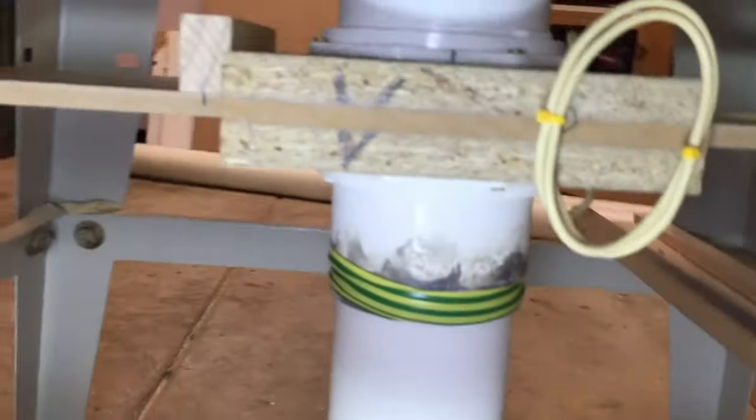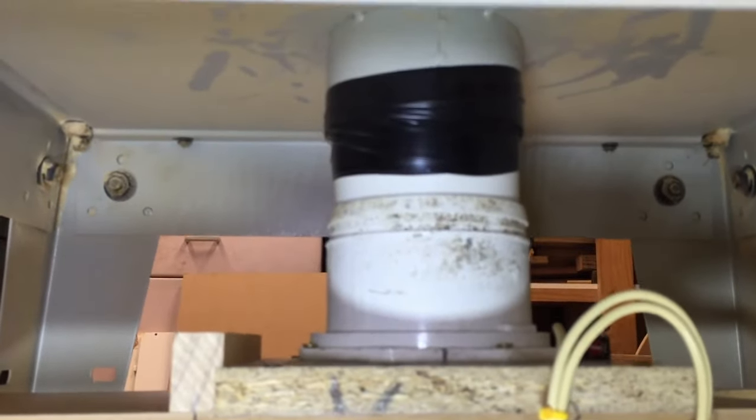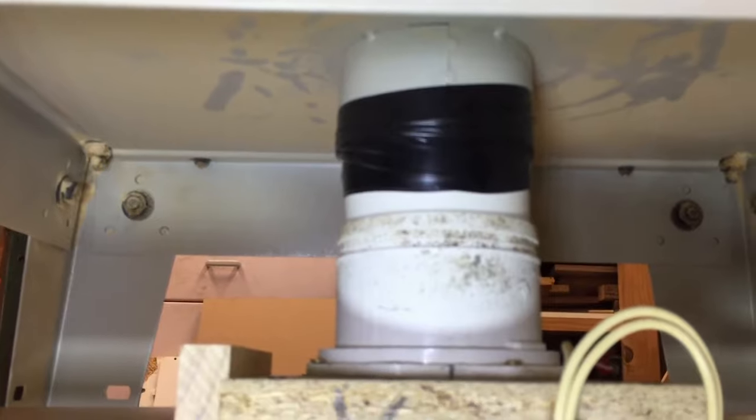So with the blast gate finished now, all I had to do was install it into the saw, and all that took was two lengths of 90mm pipe, two short lengths.